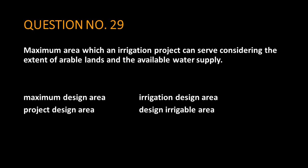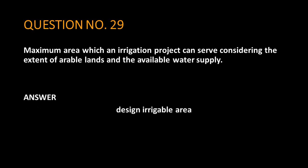Question No. 29. Maximum area which an irrigation project can serve considering the extent of arable lands in the available water supply. The answer is: design irrigable area.